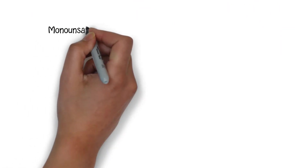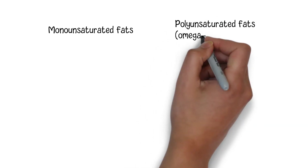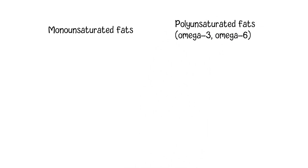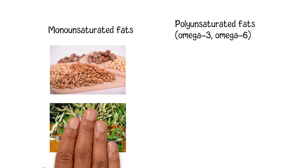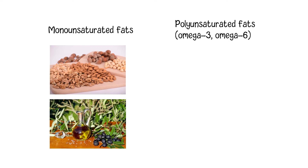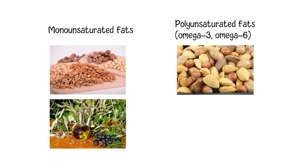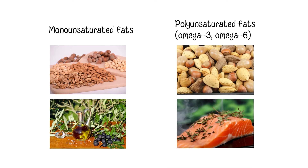Generally, there are two main categories of healthy fats: monounsaturated fats and polyunsaturated fats. Monounsaturated fats are commonly found in plant-based nuts and oils like peanuts, almonds, cashews, canola, and olive oil. As for polyunsaturated fats, omega-3 and omega-6 fats are the two important subcategories. They are also commonly found in plant nuts and seeds as well as oily fish such as salmon, sardines, and tuna.